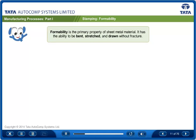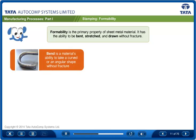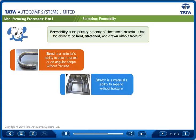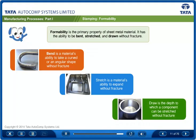Formability is defined as the ability of a material to be bent, stretched, and drawn without fracture. Bend is a material's ability to take a curved or angular shape without fracture. Stretch is a material's ability to expand without fracture. Draw is the depth to which a component can be stretched.